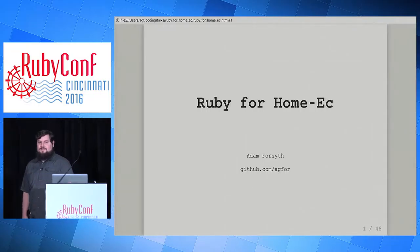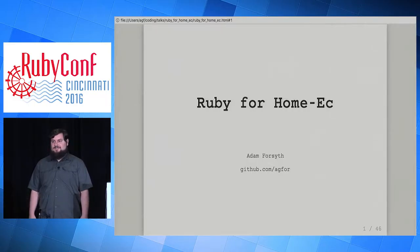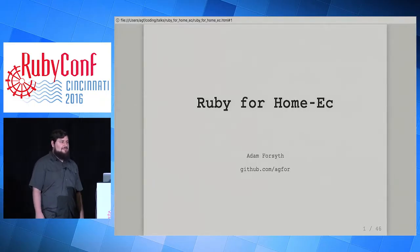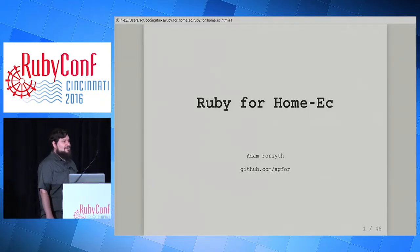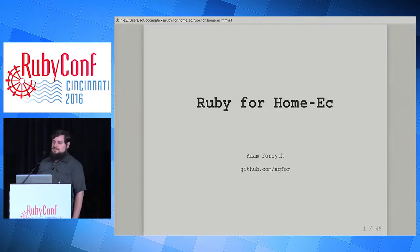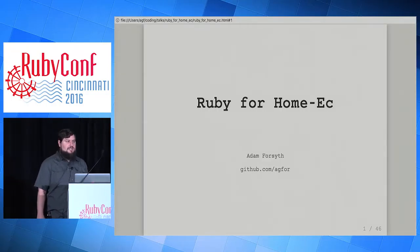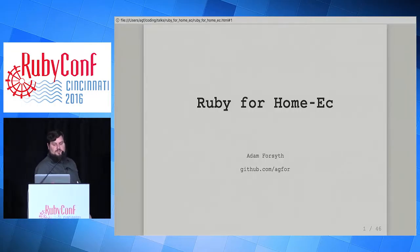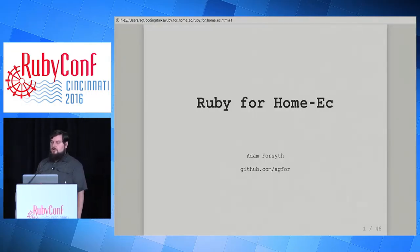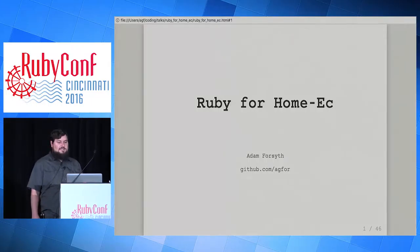Okay, let's get started. I'm Adam Forsyth. I'm a software engineer and community lead at Braintree, and this talk is called Ruby for Home Ec. After the talk I'll be posting these slides, including my speaker notes, on GitHub.